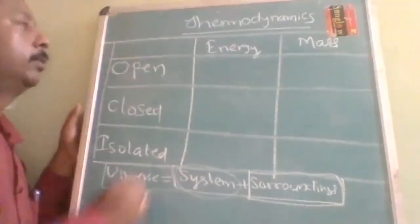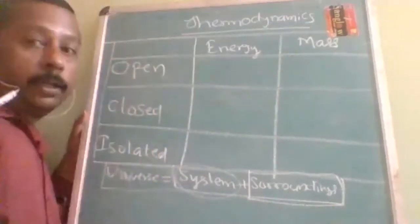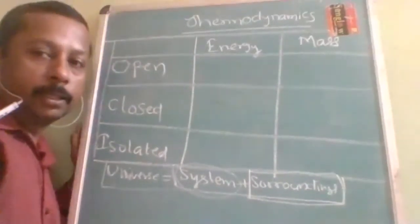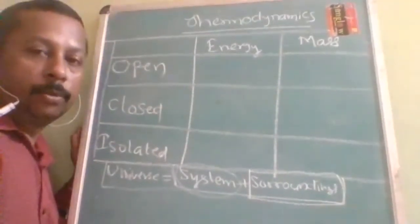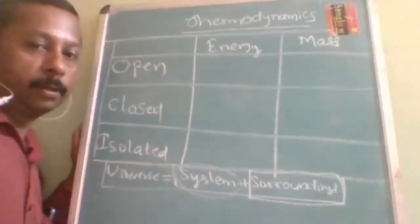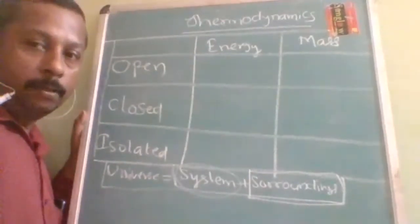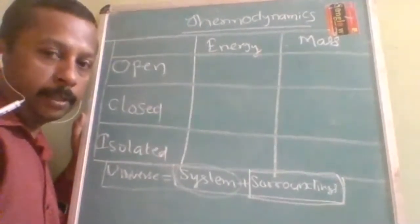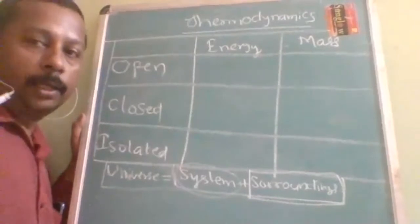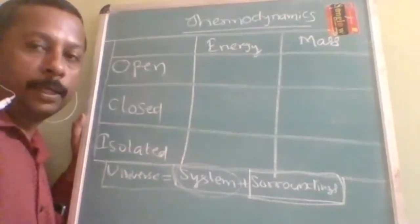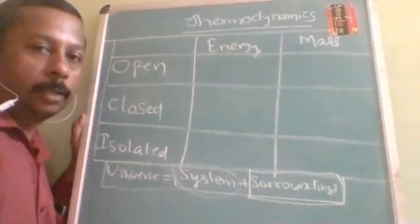Systems are further divided into three types depending on what they exchange between the system and the surrounding. There can be mutual exchange or no exchange at all. That depends purely upon the nature of the system — what properties it shares with the surroundings. Based on this, systems are divided into three types.